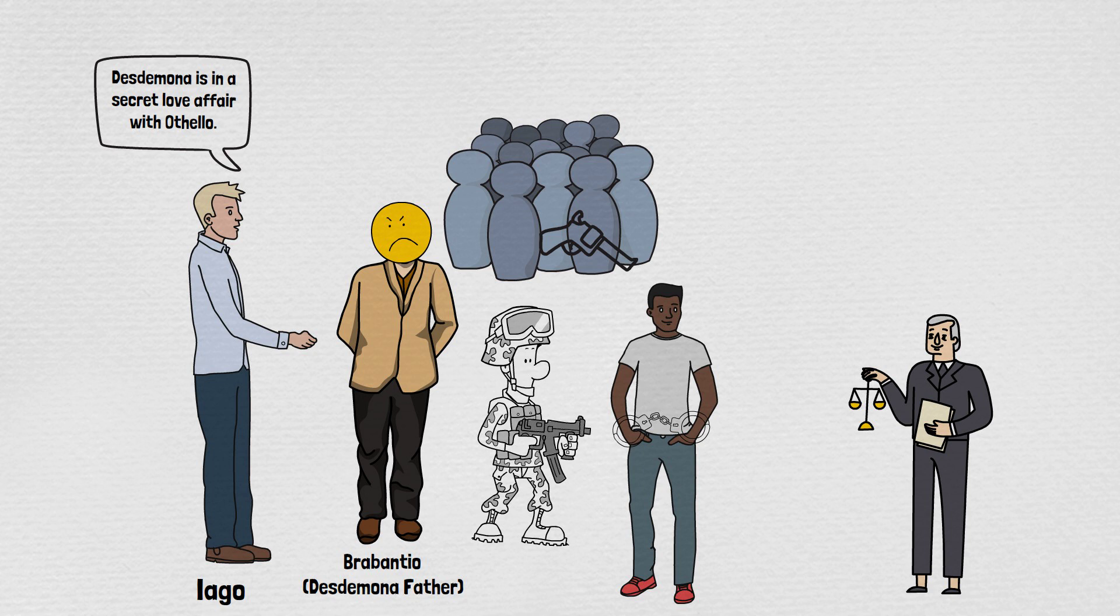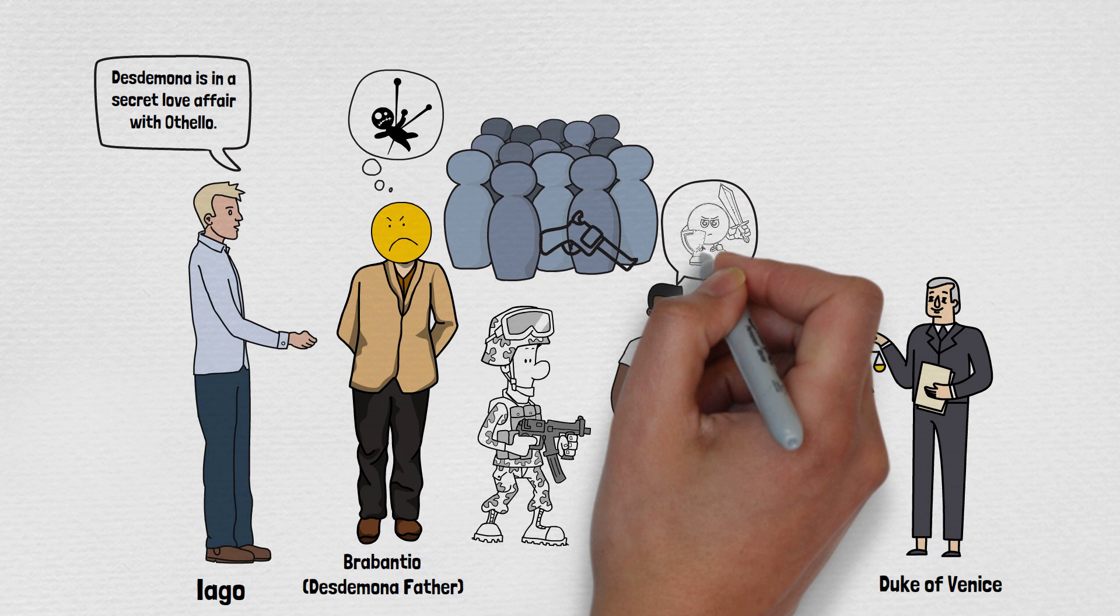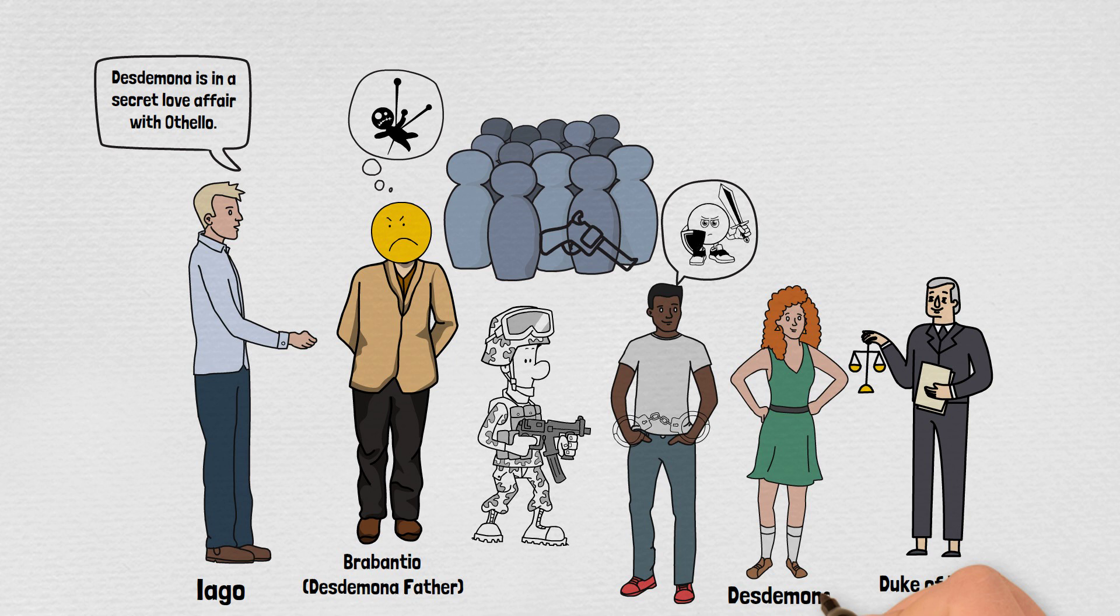Brabantio says that Othello has done some black magic on his daughter. Desdemona cannot fall in love with a black man. But Othello says that he just narrated a few stories of bravery to Desdemona and she falls in love with him. So Duke asks Desdemona about their love affair. Desdemona confesses that yes she is in love with Othello and they both want to marry each other.